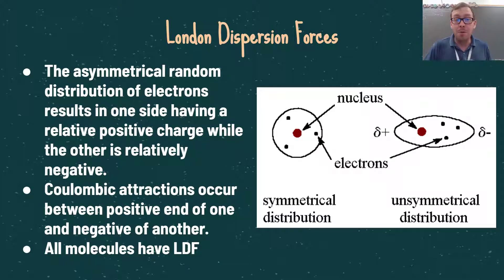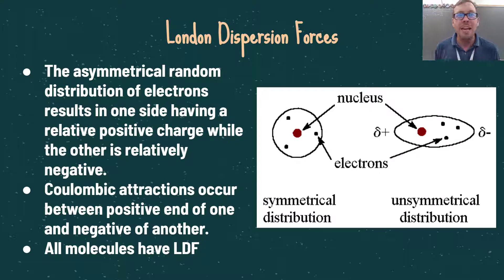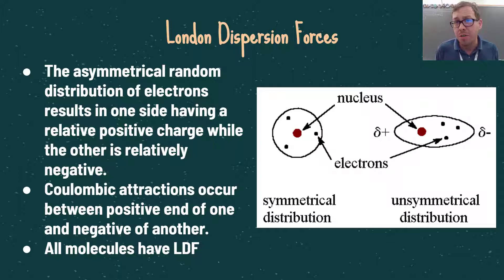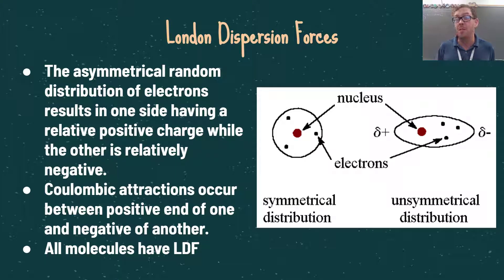The asymmetric random distribution of electrons results in one side having a relative positive charge while the other is relatively negative. Coulombic attractions occur between the positive end of one molecule and the negative end of another, creating a temporary attraction. Now again, these are only temporary. Because all molecules have electrons in their outer shells, all molecules have London dispersion forces — it just depends on the size of the molecule. Larger molecules typically have higher boiling points and melting points, and both polar and non-polar molecules have London dispersion forces.